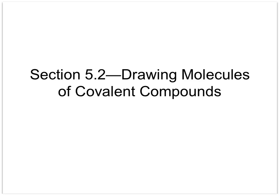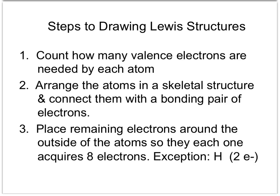In section 5.2 we will learn how to draw Lewis dot diagrams of covalent compounds. There are certain steps you need to follow to draw a correct Lewis dot structure. First, count how many valence electrons are needed by each atom. Then arrange the atoms from the chemical formula into a skeletal structure, connecting them with a bonding pair of electrons represented with a dash, and place remaining electrons around the outside so each atom acquires 8 electrons. Keep in mind that hydrogen only needs two to be stable.